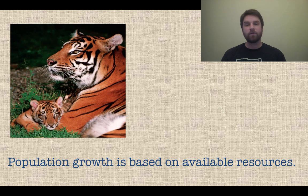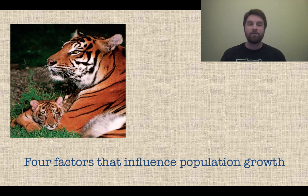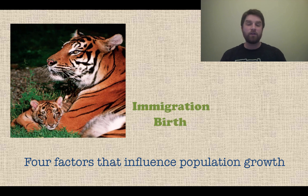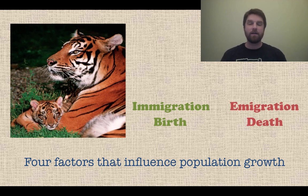Population growth is based on available resources — if the resources aren't there, the population isn't going to grow at all. Four factors that influence population growth: you have immigration and birth, which are positive things that increase population — organisms coming into or being born into a population. Then you have emigration and death, where organisms are leaving the population, so they influence population growth negatively.